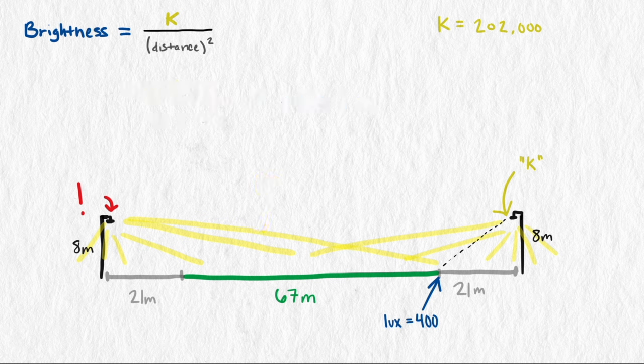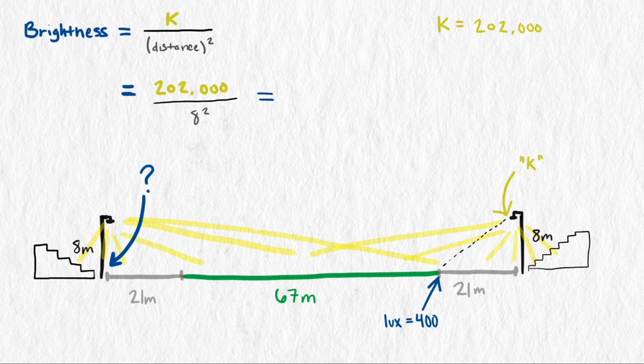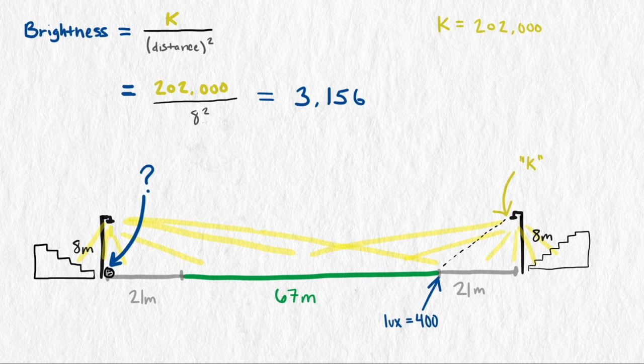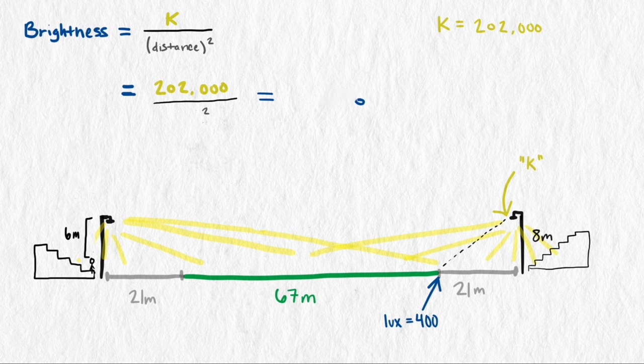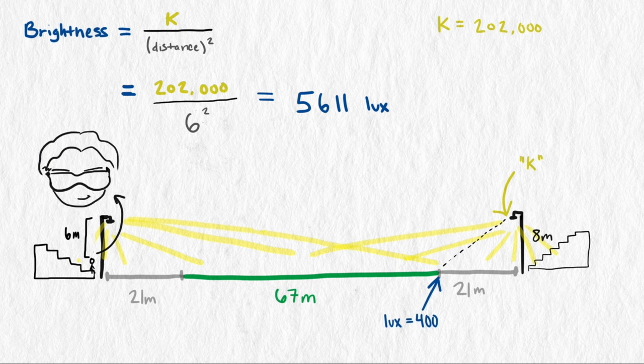We haven't considered the people watching the game. How bright is it for the people in the first row near the light? At ground level, under the light, the brightness is 202,000 divided by 8 squared, which is about 3,150 lux. And that's if your eyes are at the level of the pavement. If the fan is sitting on slightly raised bleachers, so their eyes are maybe 2 meters closer to the light, then the brightness is about 5,600 lux. That is very bright. It is almost full day bright. People want to wear hats and sunglasses bright.